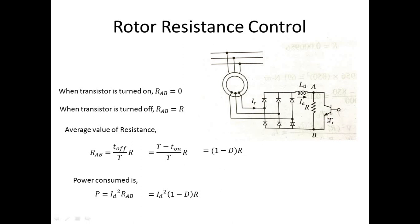It should be noted that this method can only be used in slip ring motors, since we need access to the rotor circuit output. In case of squirrel cage motors it is not possible. So this applies to slip ring motors only.